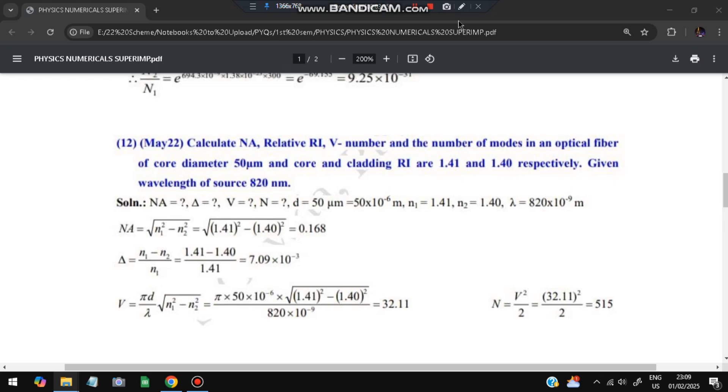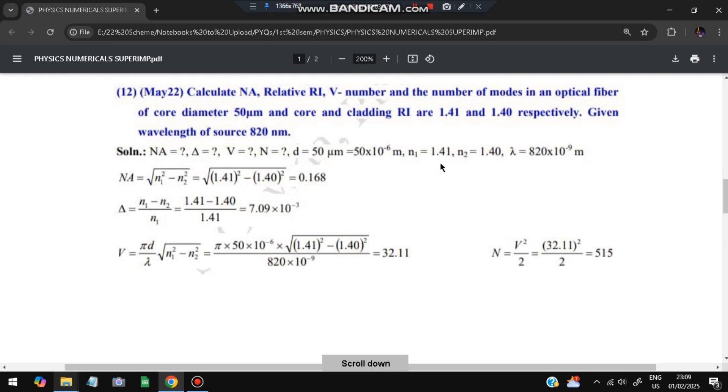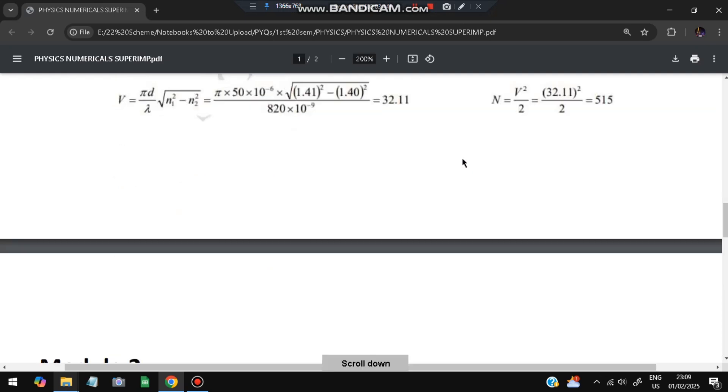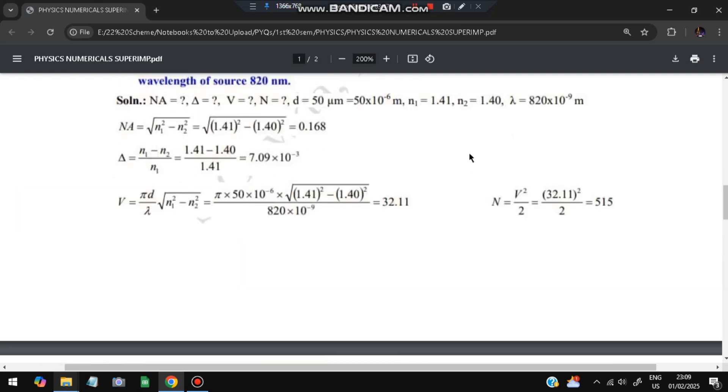We'll get these values as 32.11. The number of modes is V²/2, which is 515.